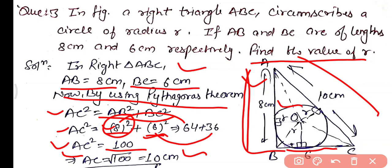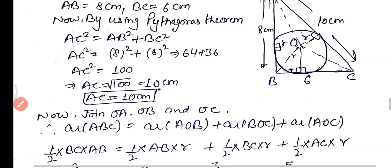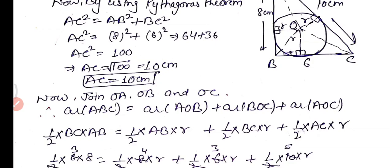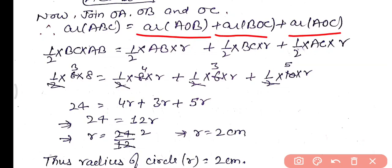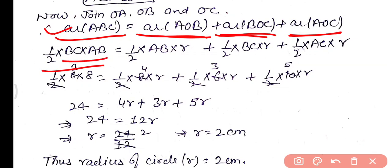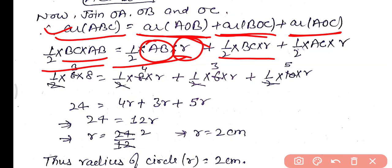To find the radius, we equate the area of triangle ABC to the sum of three smaller triangles: AOB, BOC, and AOC, formed by joining O to vertices A, B, C. Area of triangle ABC equals area of AOB plus area of BOC plus area of AOC. Area of AOB equals 1/2 times AB times r, since the radius is perpendicular to the tangent. Area of BOC equals 1/2 times BC times r, and area of AOC equals 1/2 times AC times r.